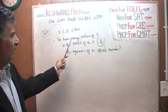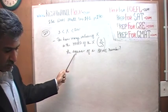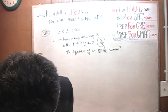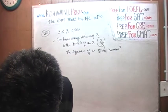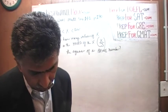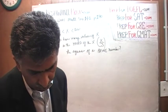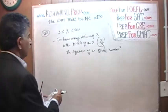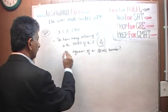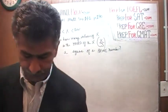One more time, let's read it: for how many values of X is one-third of X a square of a prime number? You should not say 'the square' — you should say 'a square of a prime number.' Let's find out, shall we?